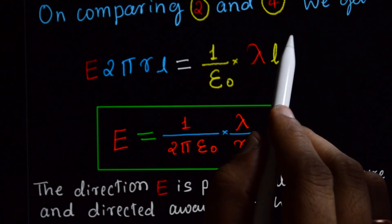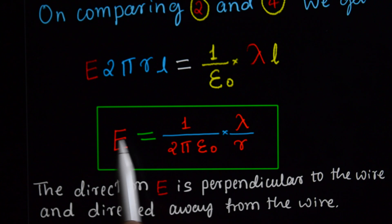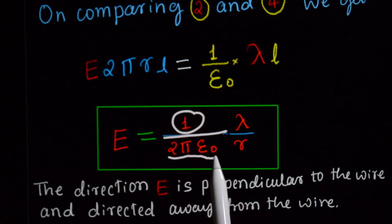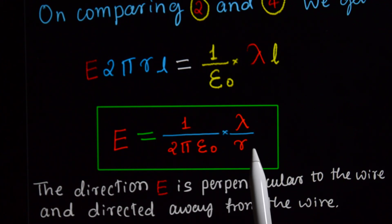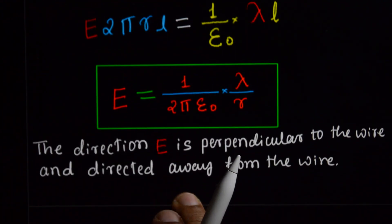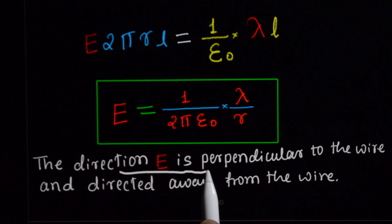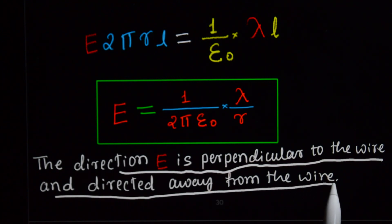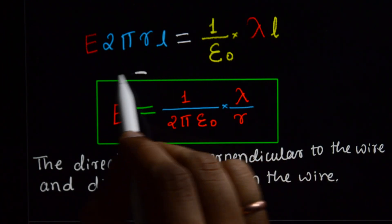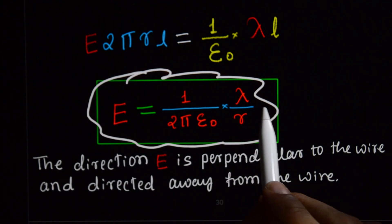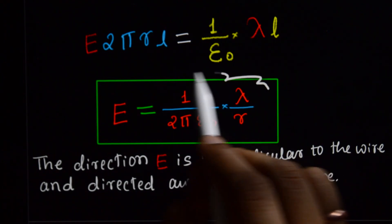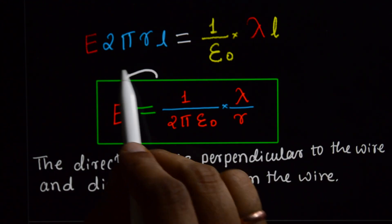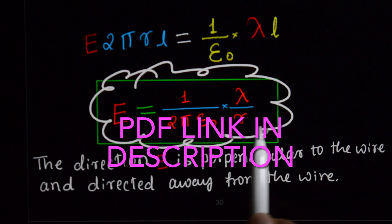Cancelling L from both sides, E is equal to 1/(2πε₀) × λ/R. The direction of electric field is perpendicular to the wire and directed away from the wire. This is the expression for electric field due to an infinitely long straight charged wire at distance R. This is your 5-mark topic.